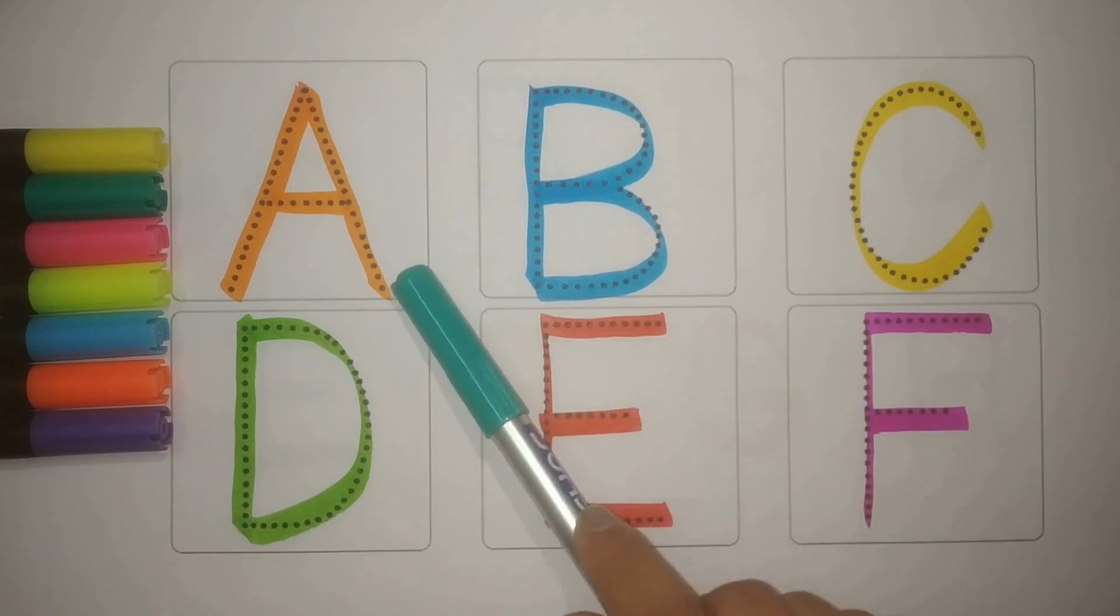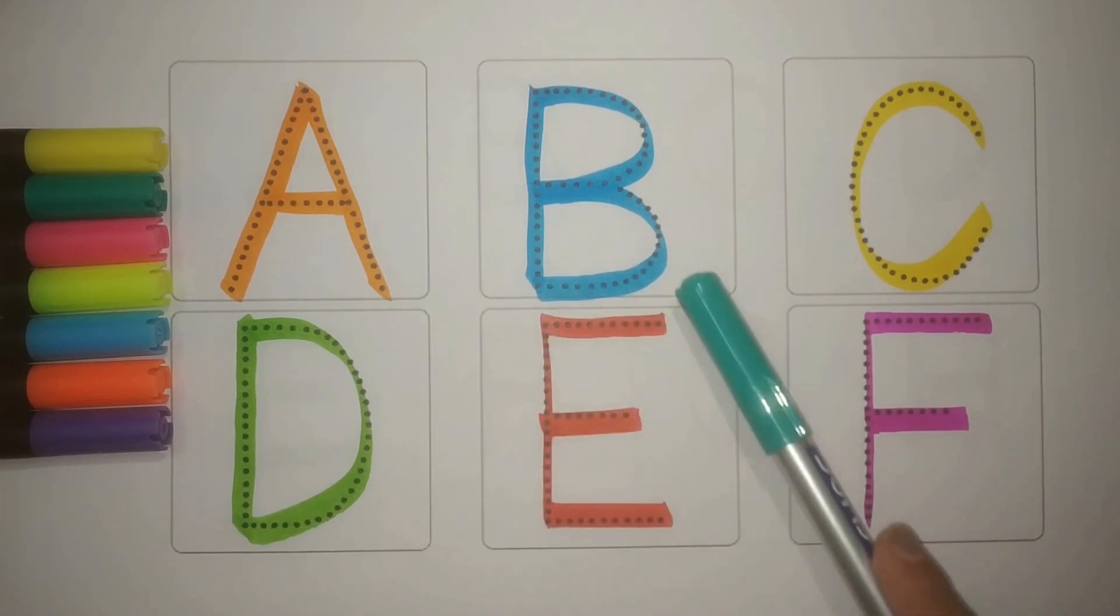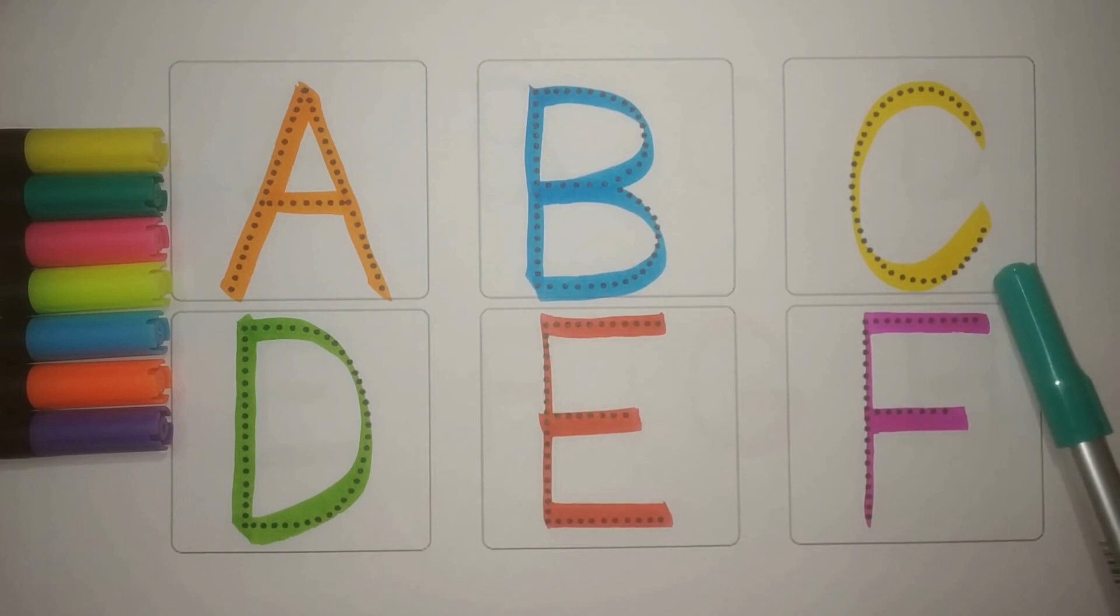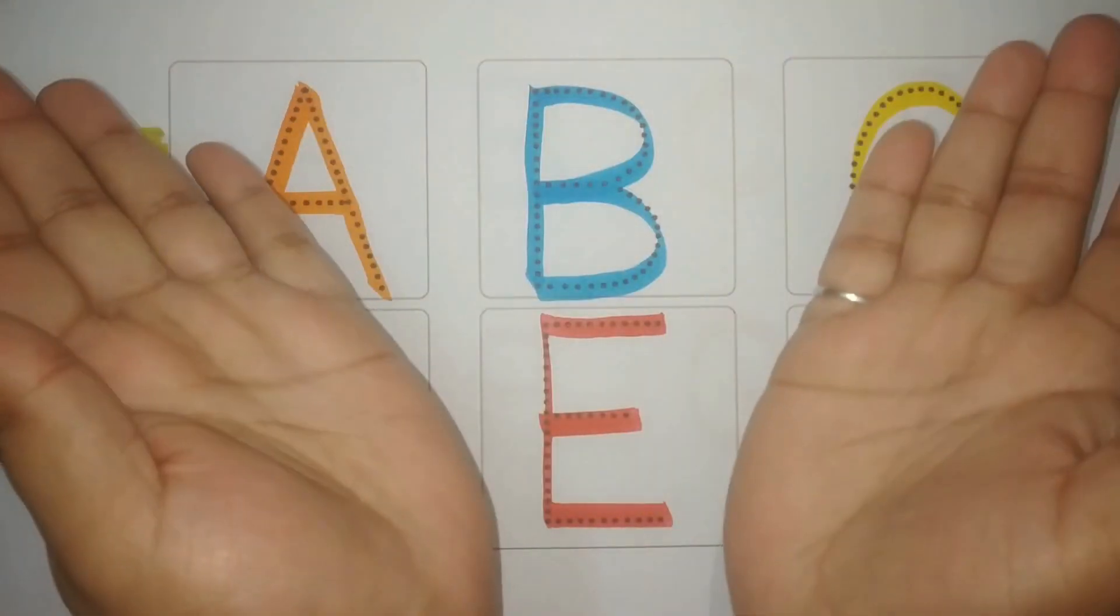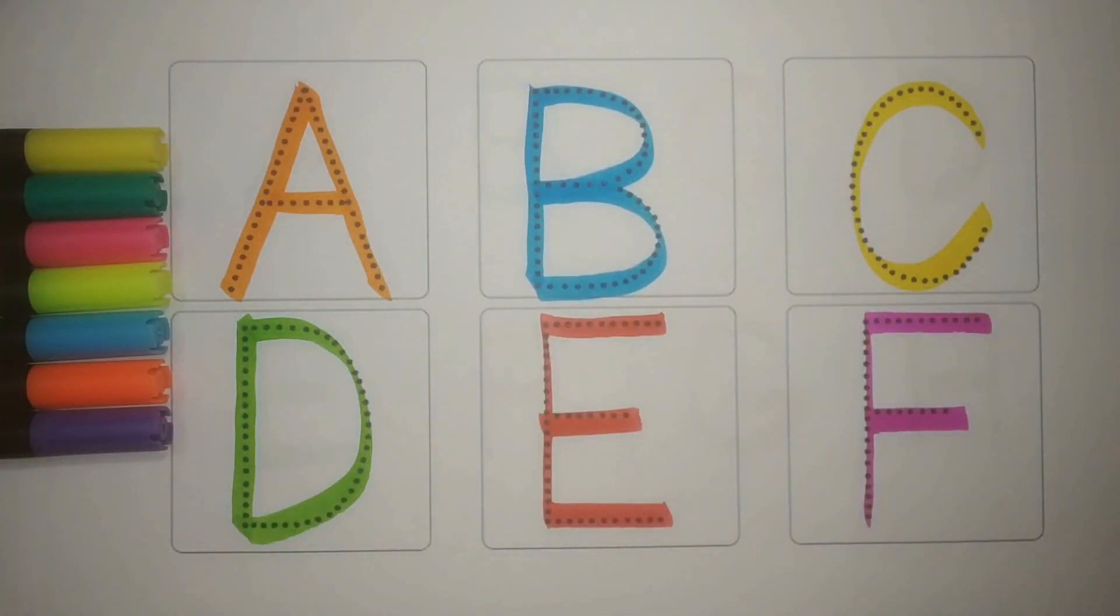A Orange, A for Apple. B Blue, B for Ball. C Yellow, C for Carrot. D Green, D for Door. E Red, E for Egg. And F, F for Flag. Simple. Chalo kal milte hai. Bye Bye.